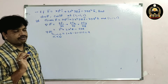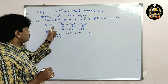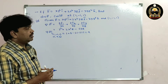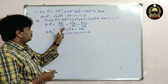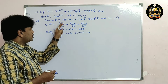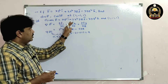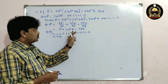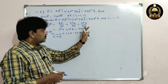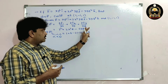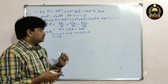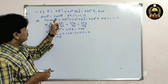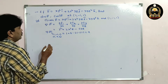Once again, del dot f̄ = ∂f1/∂x + ∂f2/∂y + ∂f3/∂z. Here f1 = xy², differentiating partially with respect to x gives y². Then 2x²yz differentiated partially with respect to y gives 2x²z. And -3yz² differentiated partially with respect to z gives -6yz. Simply substituting the point gives divergence = 9.